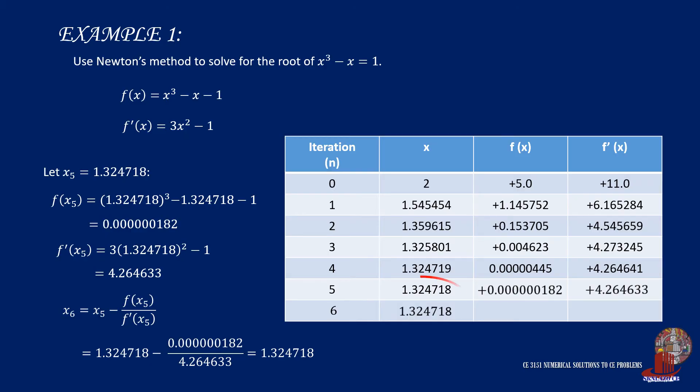In this case, x sub 5 and x sub 6 provide the same value up to the sixth decimal, so we can conclude that the approximate root of x is 1.324718.